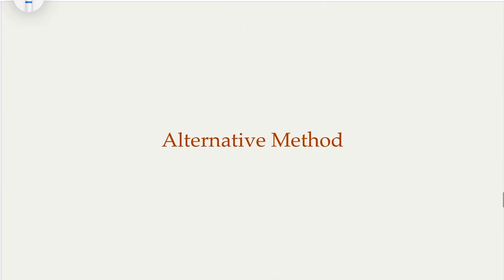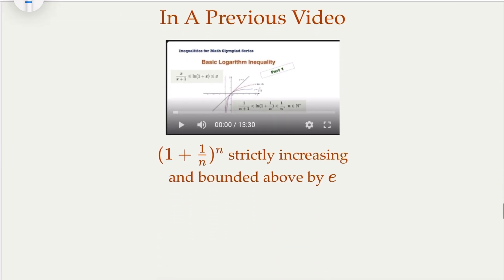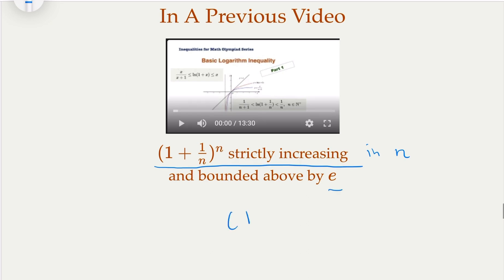Now we're going to look at an alternative method. So in a previous video, we covered some basic logarithm inequality. Over there, we claim that this sequence is strictly increasing as n getting bigger and bigger. But they're bounded by e. In other words, everything here is less than e. e, of course, we know that is 2.7 something, which is less than 3. In our case, we care about n greater than 3. So it's less than n when n is greater or equal to 3.